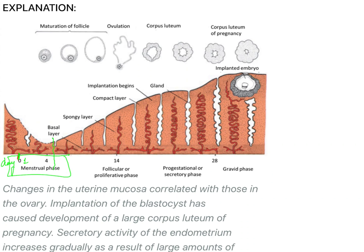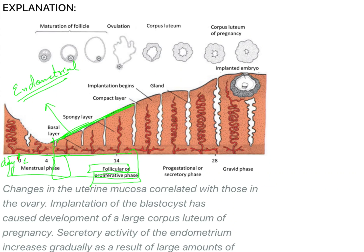Between day 5 to 14 there will be a proliferative phase, or in the case of the ovarian cycle it is called the follicular phase. In the ovarian cycle we call it the follicular phase; otherwise we call it the proliferative phase, because during this period the endometrium — the endometrial wall — keeps on proliferating. After that, on the 14th day, there occurs ovulation.